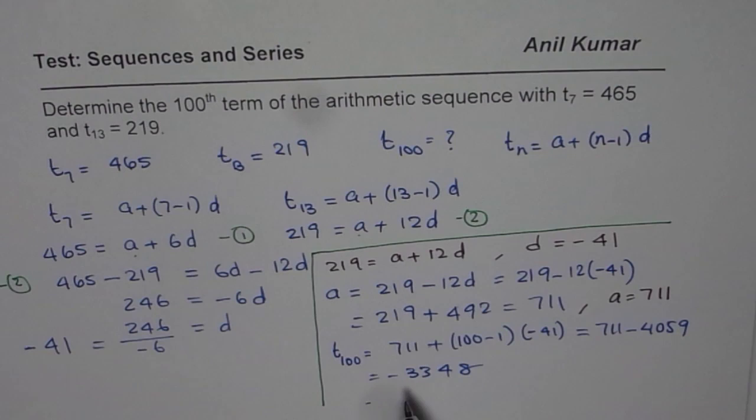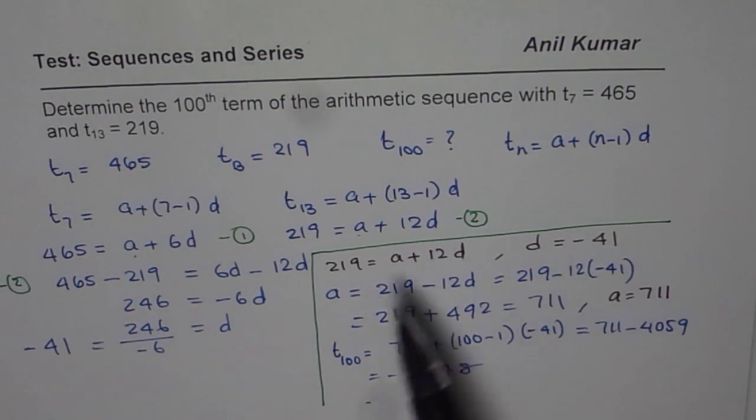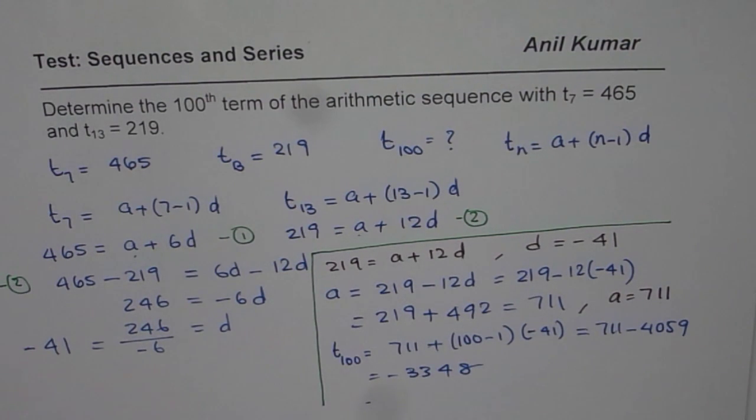So that is how you can get your 100th term. The idea here is, given those two terms, find A and D. Once you have A and D, then get your 100th term. So that is the step to be taken. This is a knowledge-based question. I hope that helps. Thank you and all the best.